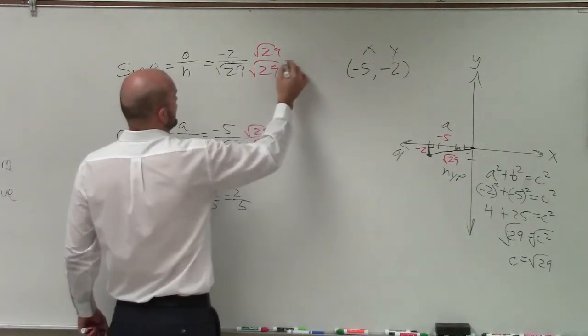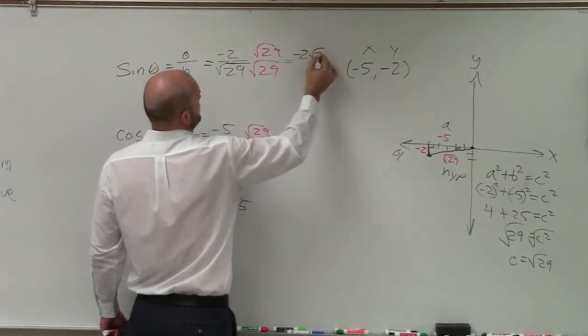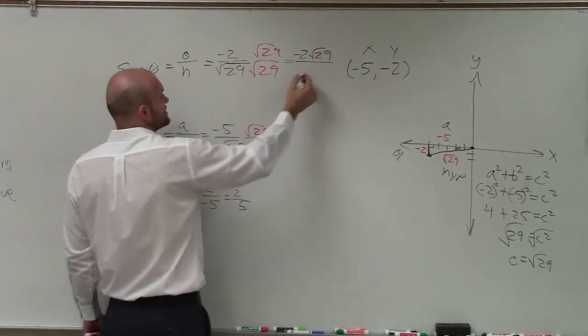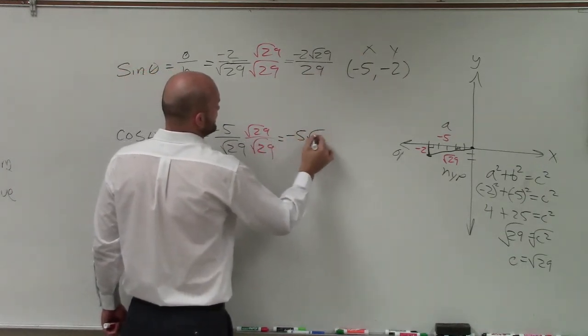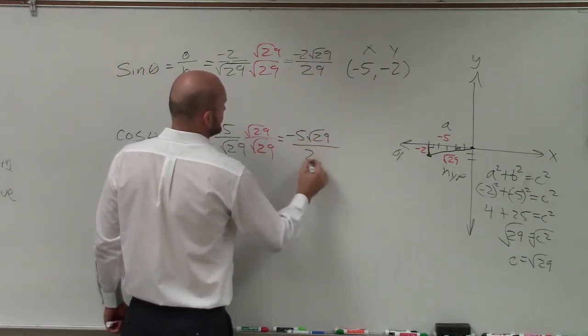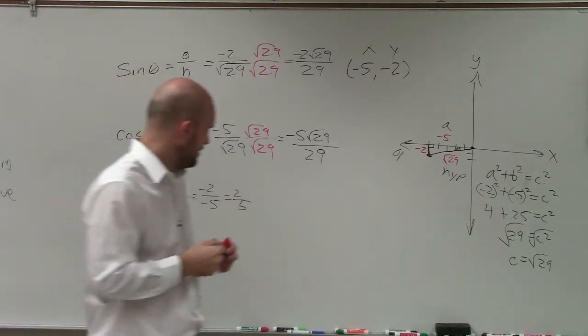Because now you're making the denominator a rational number. So now, when I do that, I get negative 2 times square root of 29, all over 29. Square root of 29 times square root of 29 is 29. Here, I have negative 5 times the square root of 29, all over 29. And now I'm just going to leave there as 2 fifths.